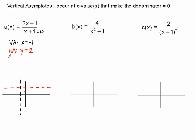Let's do our x-intercept. x-intercepts are called the roots or the zeros of our function. Rational functions — fractions — are equal to 0 when the numerator is equal to 0. So we set the numerator equal to 0 to find the x-intercept and solve. We subtract 1 and divide by 2, so we get negative one-half for our x-intercept, and we plot a dot right there on the x-axis.